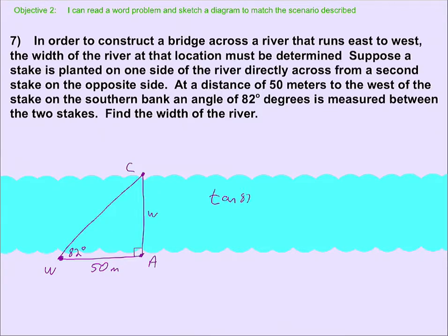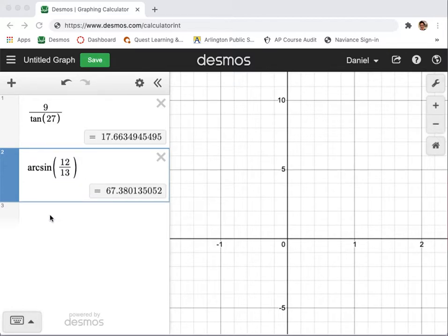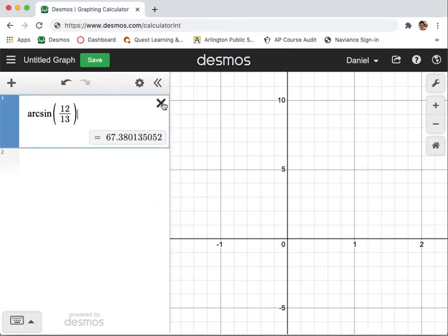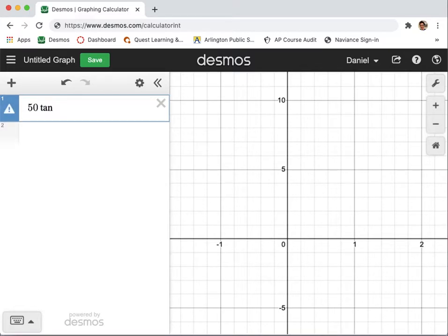Tangent of 82 degrees is equal to my w that I'm looking for divided by 50. And so the w by cross multiply is equal to 50 times the tangent of 82 degrees. And again, with these degrees, that's not mental math that you can do. So, you would go in and type that one in. 50 times the tangent of 82 degrees.